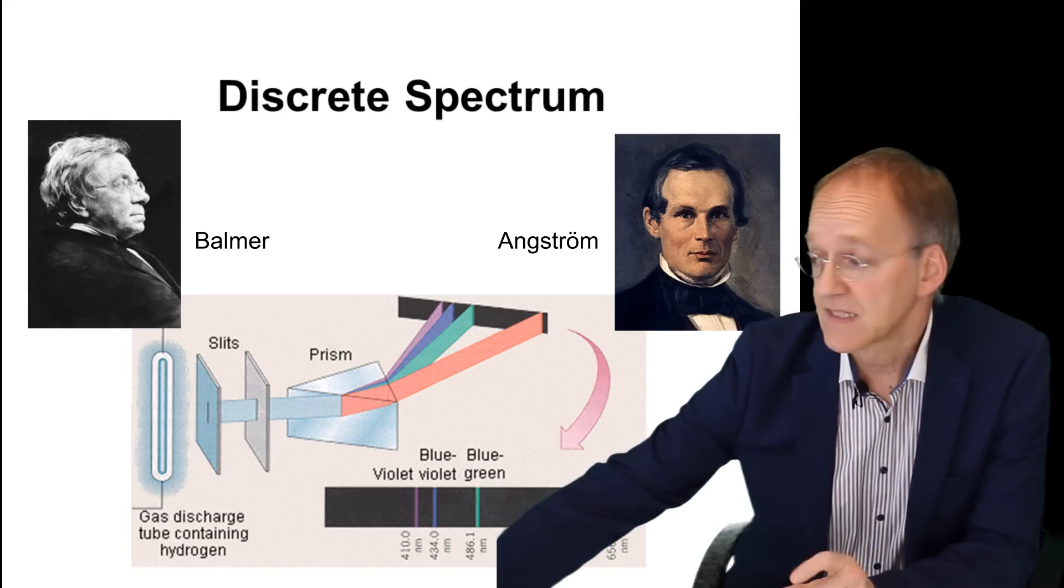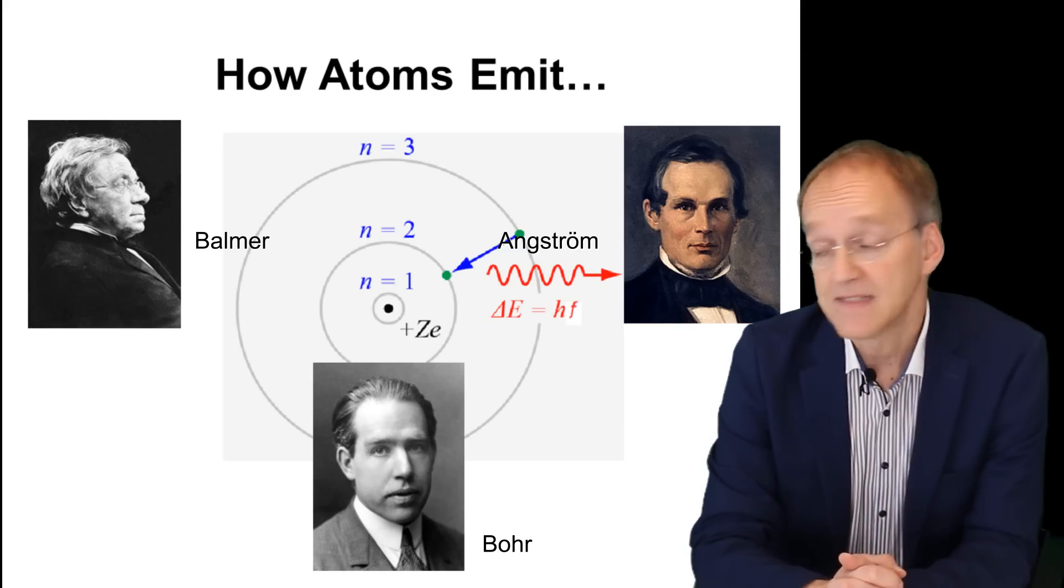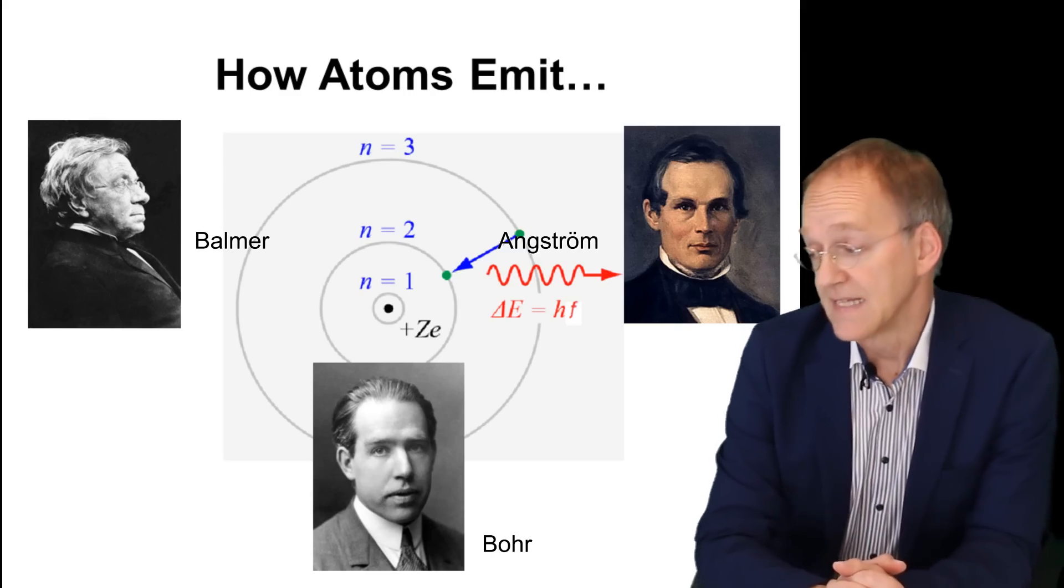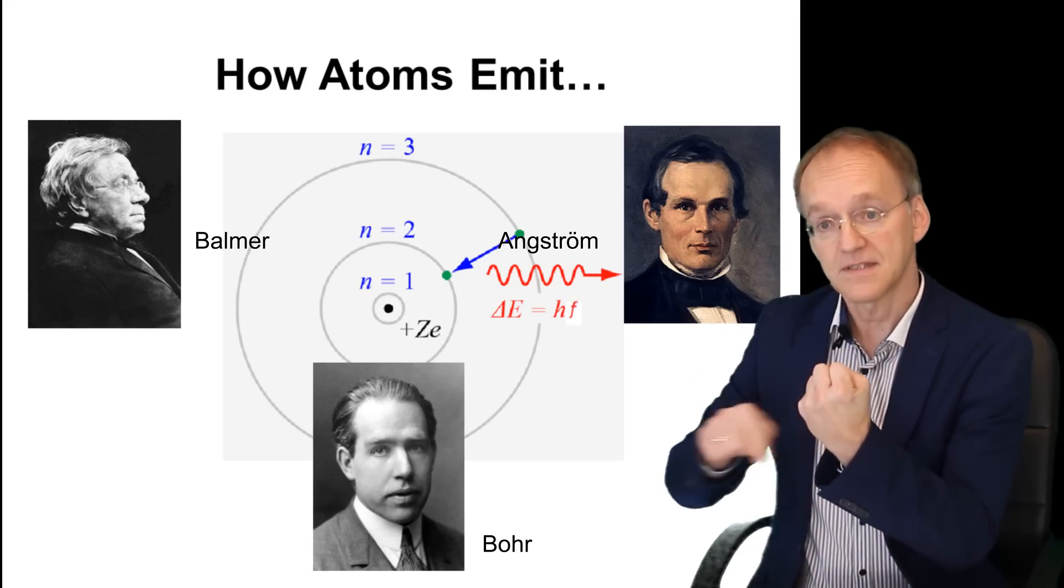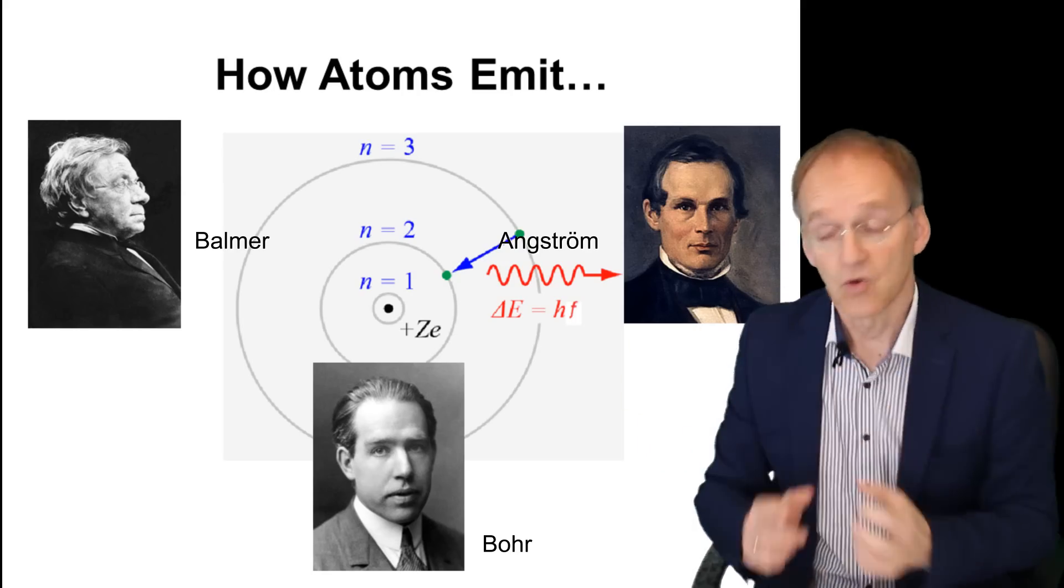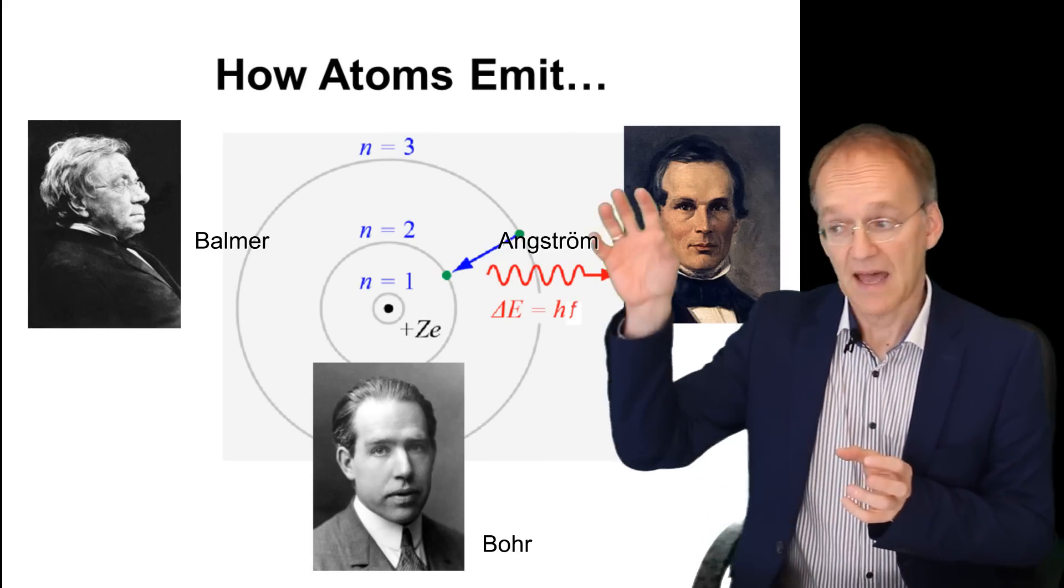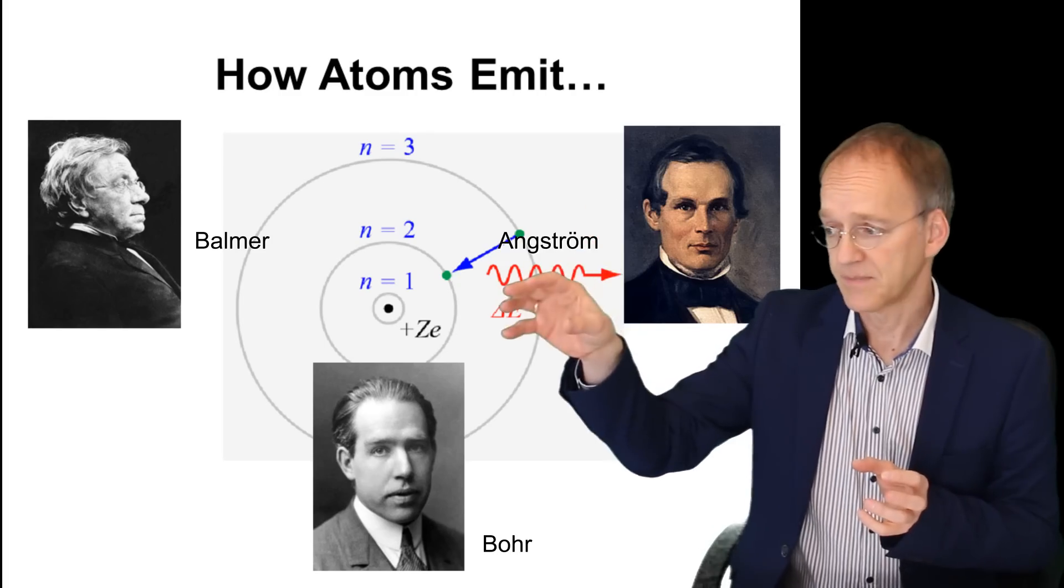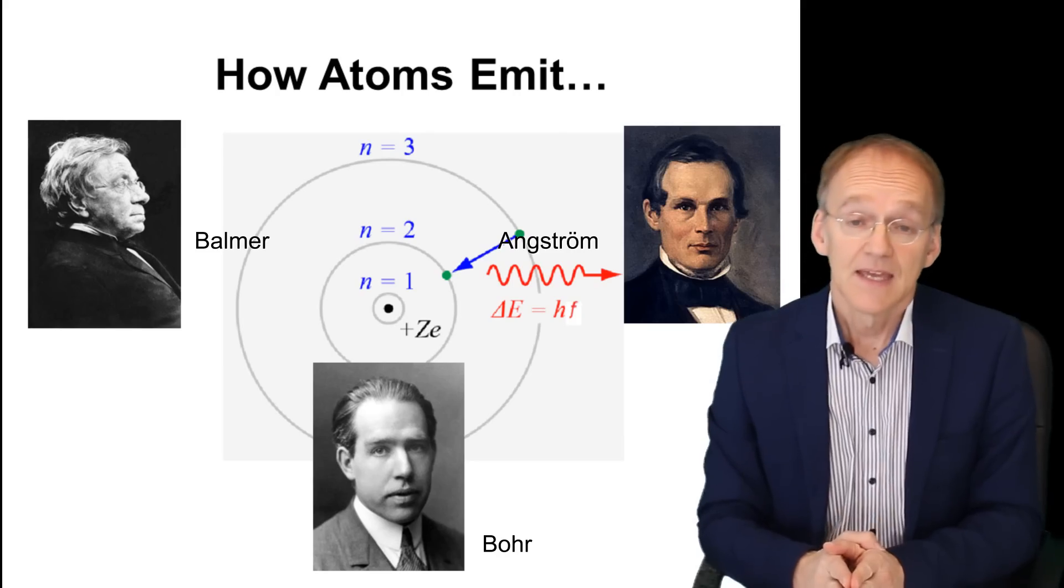Only with this, Niels Bohr 30 years later was able to develop his model of the atom. Essentially it says that there is a nucleus and you have discrete electron orbits, and light is emitted when an electron jumps from a higher orbit, say from the third shell to the second or even the first shell.